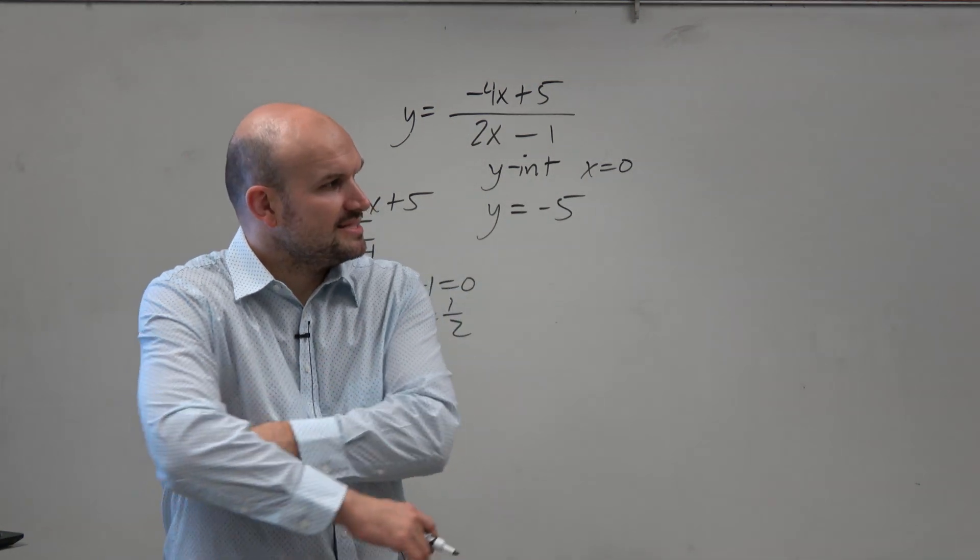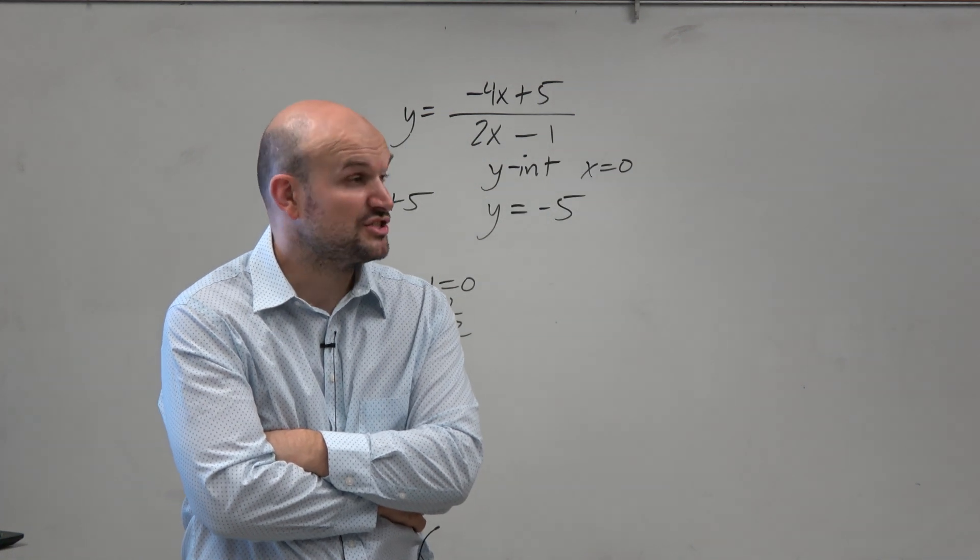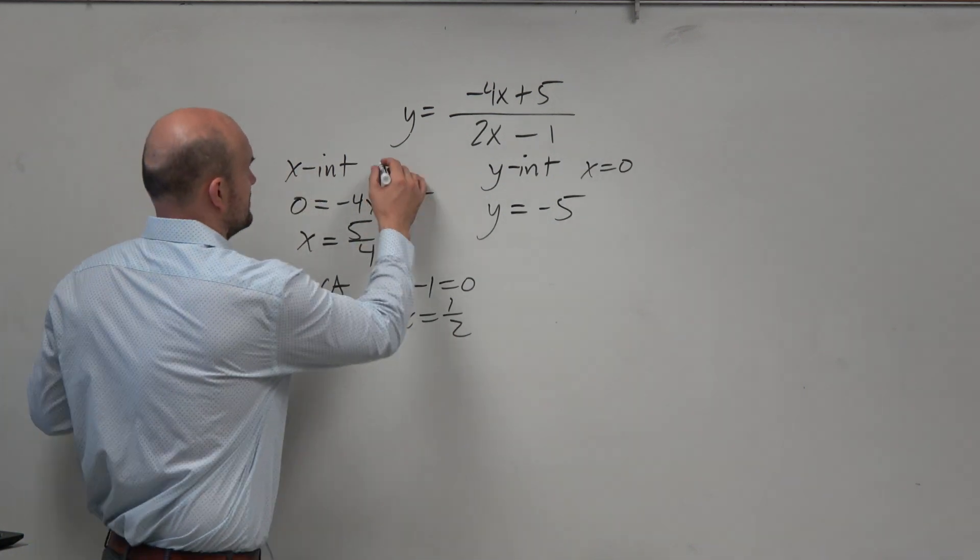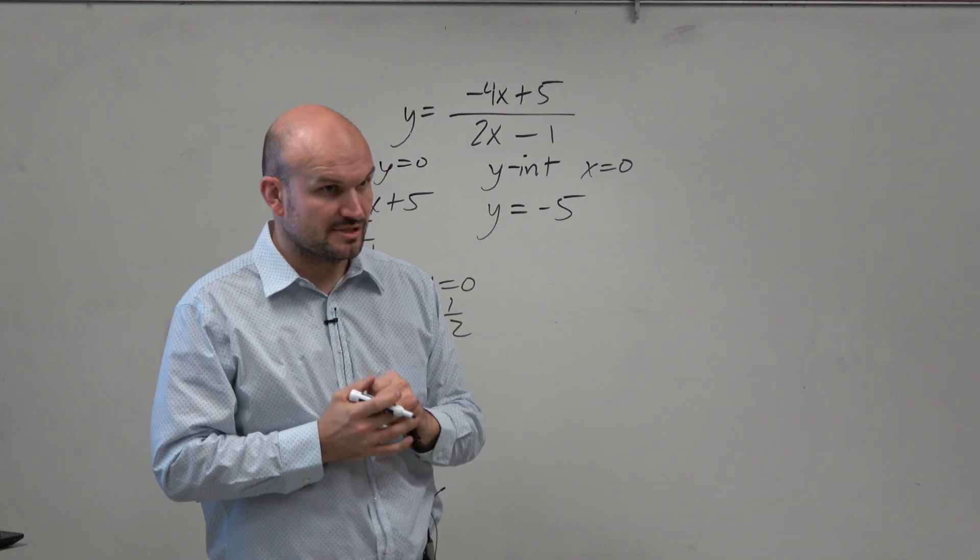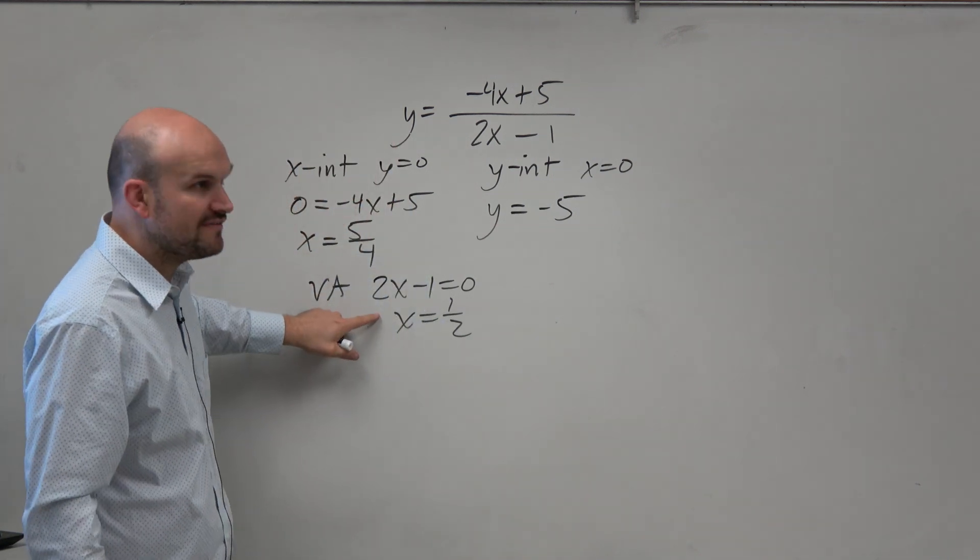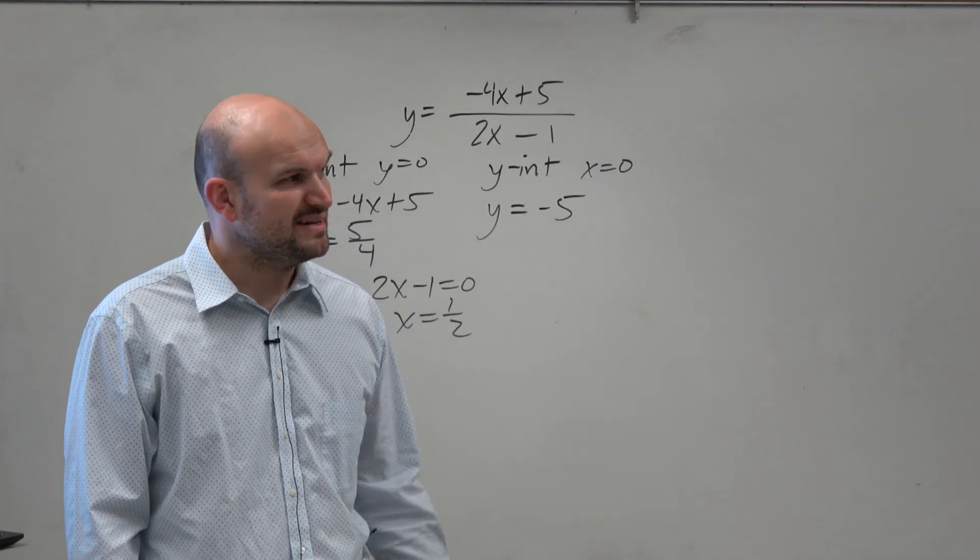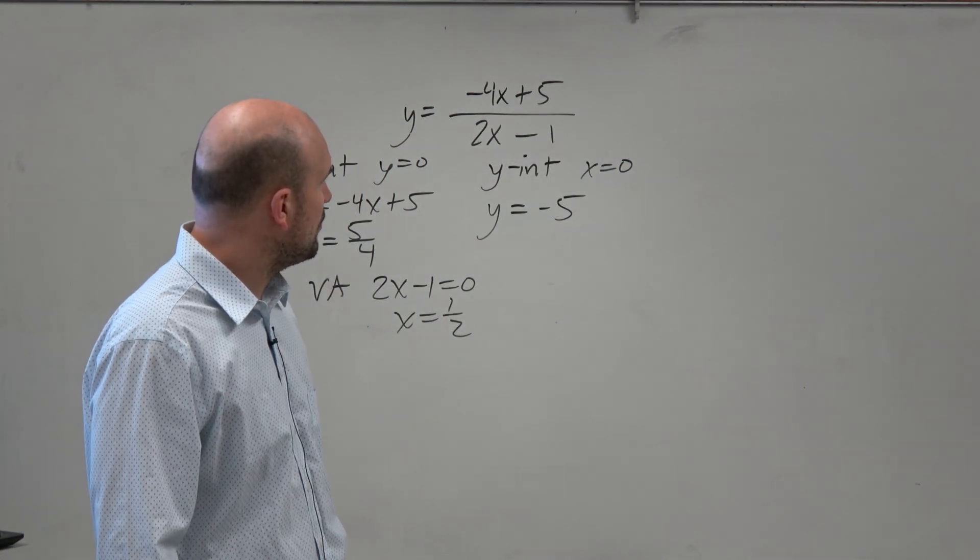The problem is, what the heck is the horizontal asymptote? So up to this point, you actually didn't need to be in class up to this point, because we've already discussed how to find the x-intercepts when y equals 0, how to find the y-intercept when x is equal to 0, and how to find vertical asymptotes. But now we got to say, well, how am I going to find this horizontal asymptote?